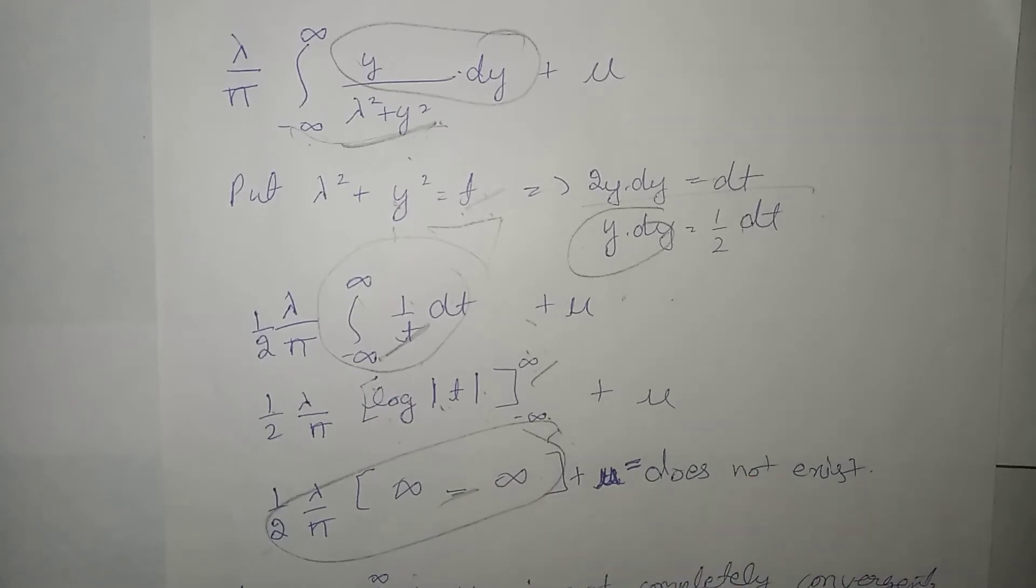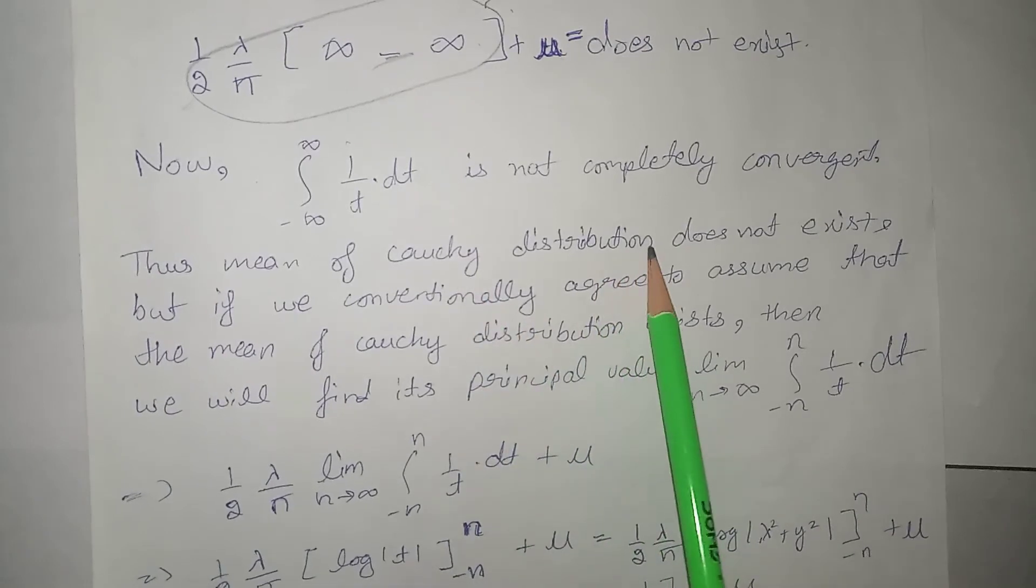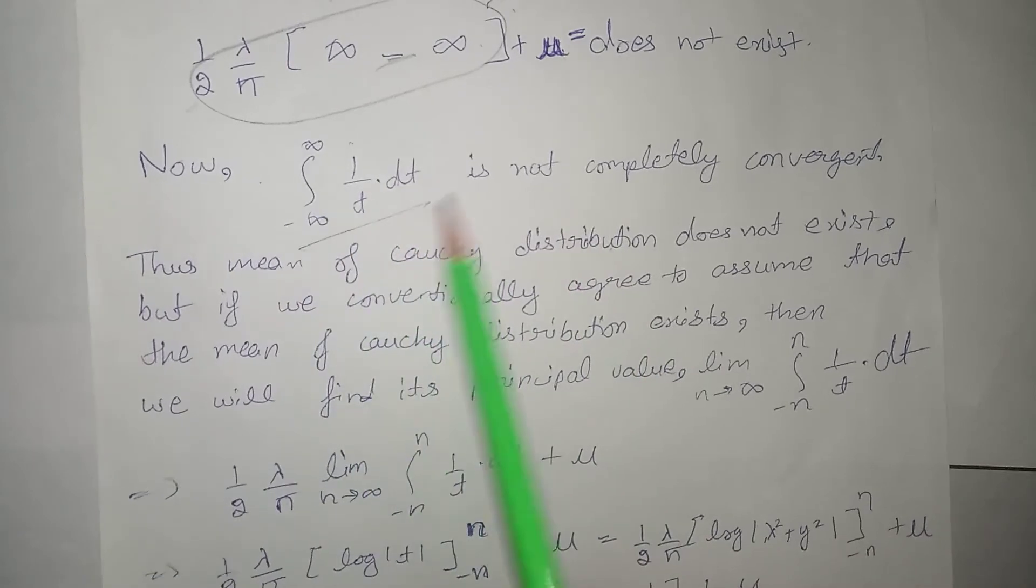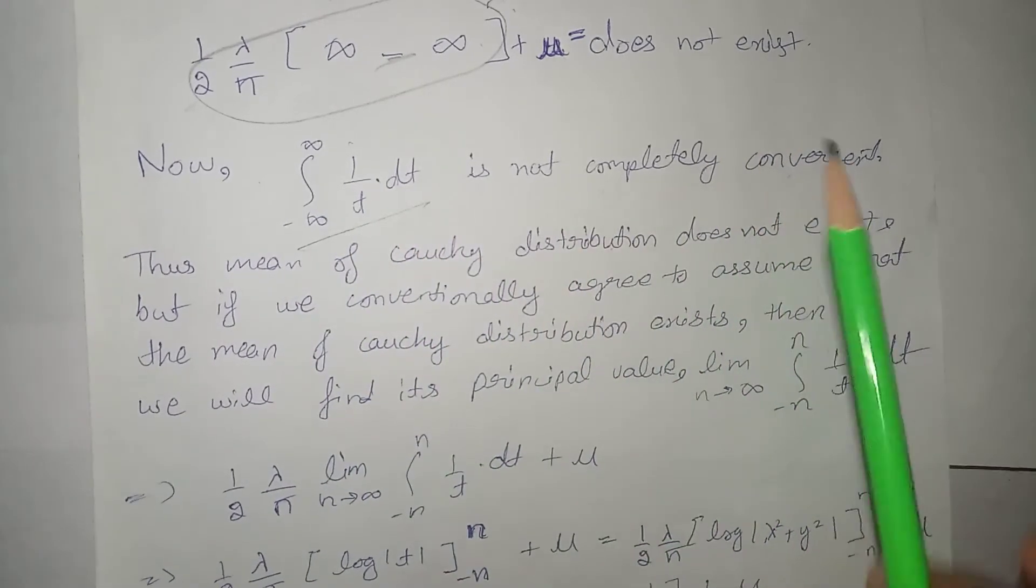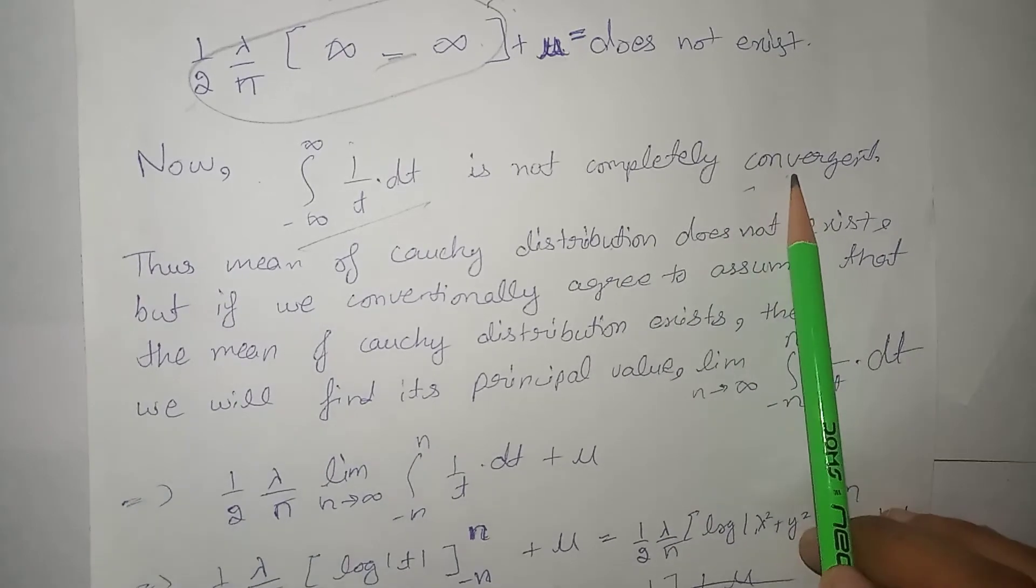That is, does not exist. So, this means, that is, jo mean hai Cauchy distribution ka, woh exist nahin kar raha. Because, ye jo integral hai, ye convergent nahin hai hai. Because, iska answer hai jo, woh hamare does not exist raha hai.